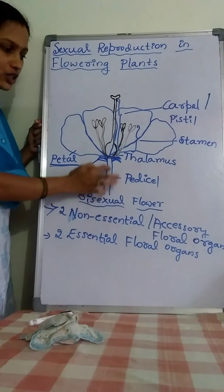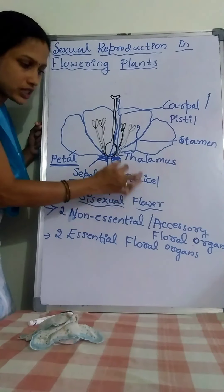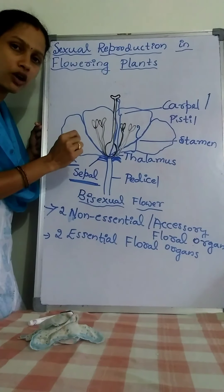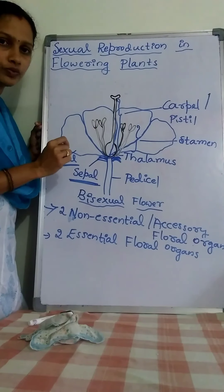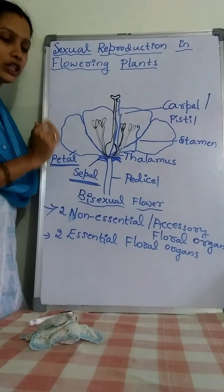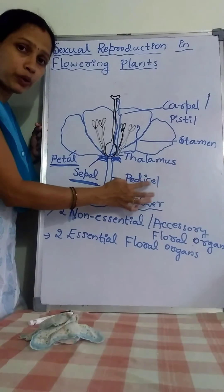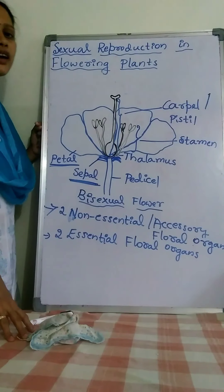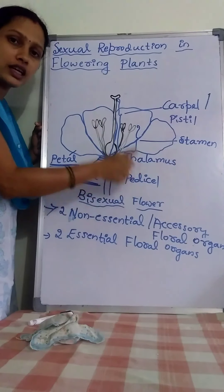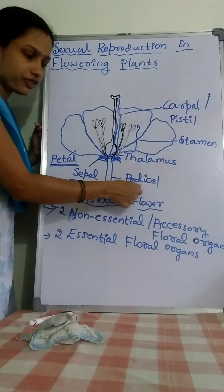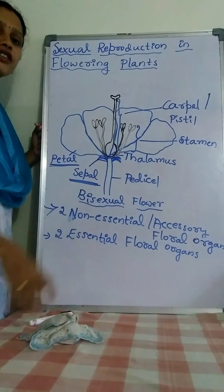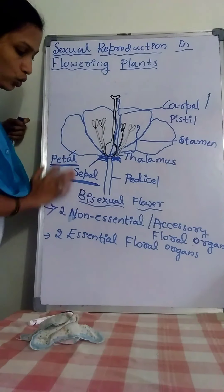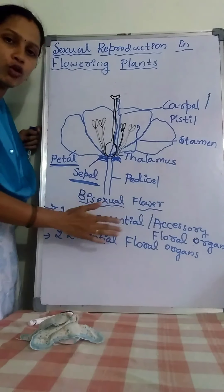The stalk of the flower is called as pedicel. The stalk of the leaf is called as petiole. The stalk of the flower is pedicel, whereas the stalk of the fruit is called as pedicle. This is about the two non-essential or accessory floral organs.